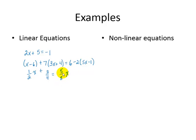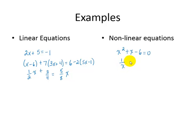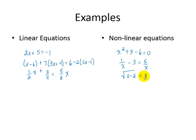Equations that are not linear are x squared plus x minus 6 equals 0, one divided by x minus 3 equals 5 divided by x, or the square root of x minus 2 is equal to 3.